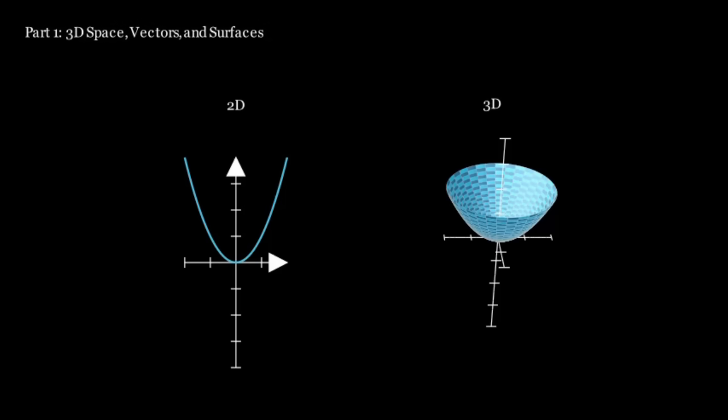Part 1: 3D space, vectors, and surfaces. Just like in 2D, there exist functions in 3D. These functions take two inputs on the x and y axes, and produce an output on the z axis.